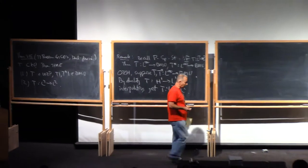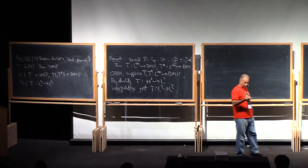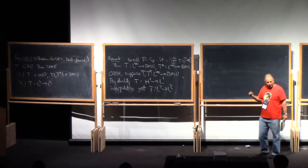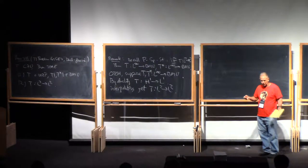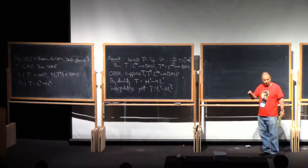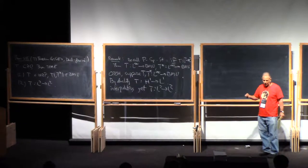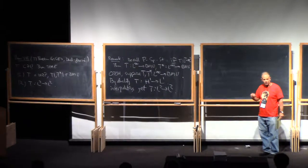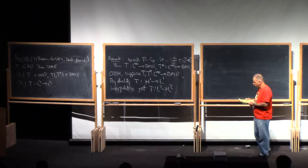Remember, we saw that weak-boundedness automatically holds if you're looking at the principal value operator associated to an anti-symmetric kernel, which our examples often happen to be. In fact, for the examples that we've discussed, Cauchy integral operator and the Calderón commutators, they are anti-symmetric.